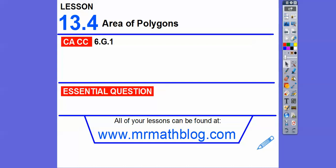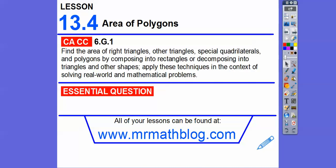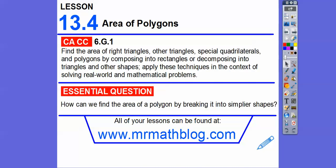Hey, everybody. This lesson is area of other kinds of polygons. We've done rectangles and squares — a square is just a rectangle — triangles, parallelograms, trapezoids, and rhombuses. So here we're going to do the same stuff, except we're going to make them into smaller figures and then add and subtract them.